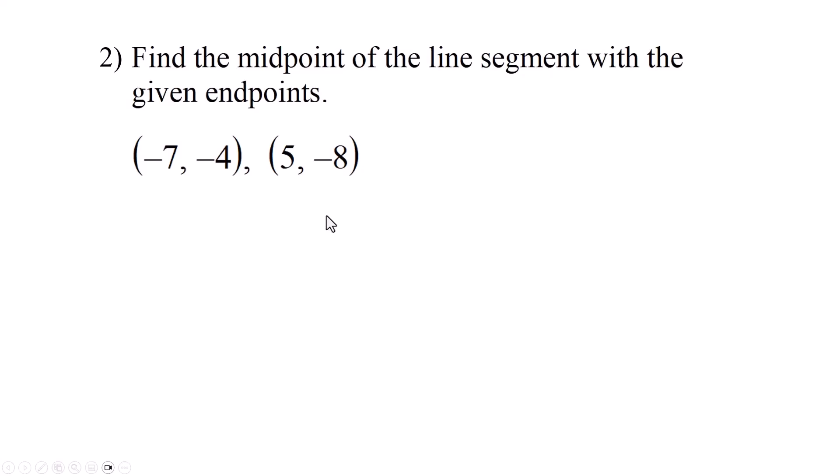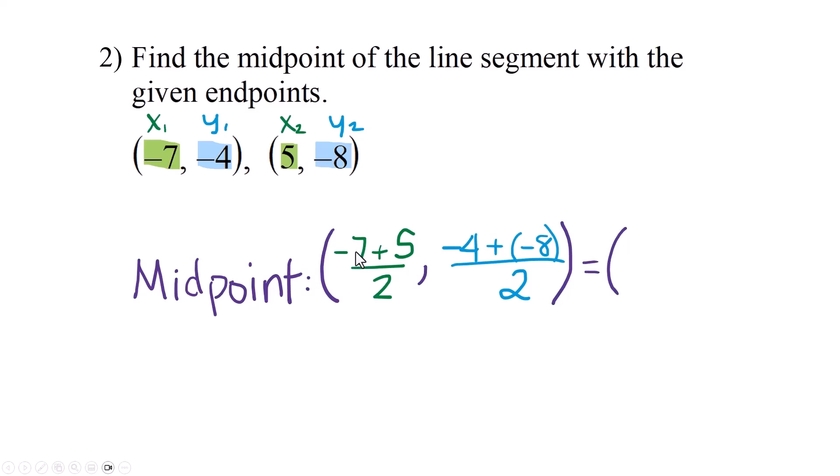The process is the same, but the numbers we're working with are going to be a little bit more challenging because we have negative numbers in here. You're still going to do the same thing. Add the x's together: negative 7 plus 5 over 2. Add the y's together: negative 4 plus negative 8 over 2.